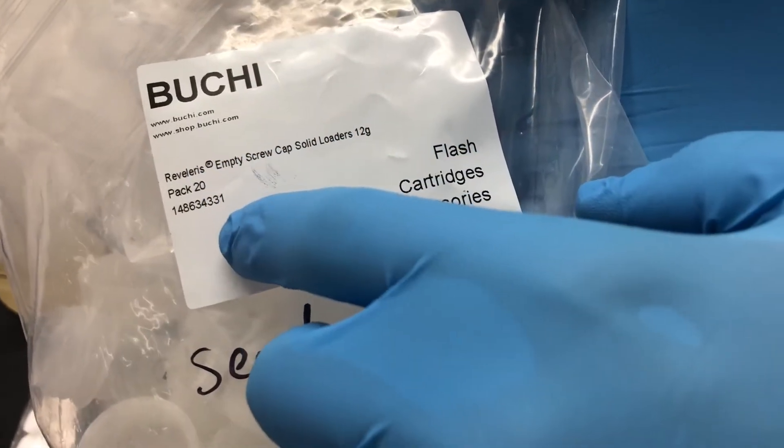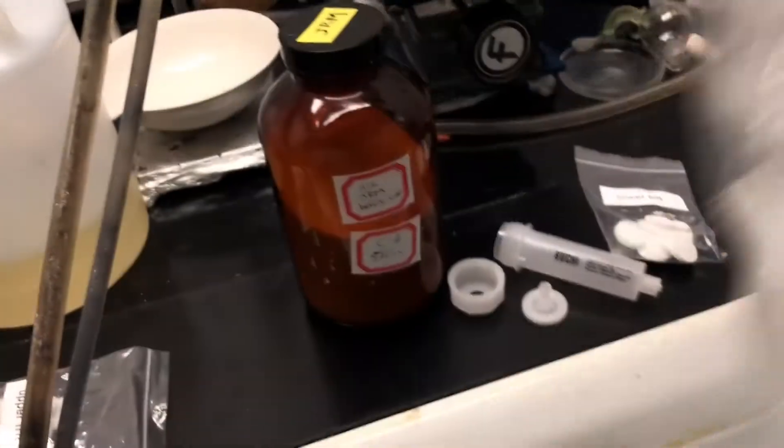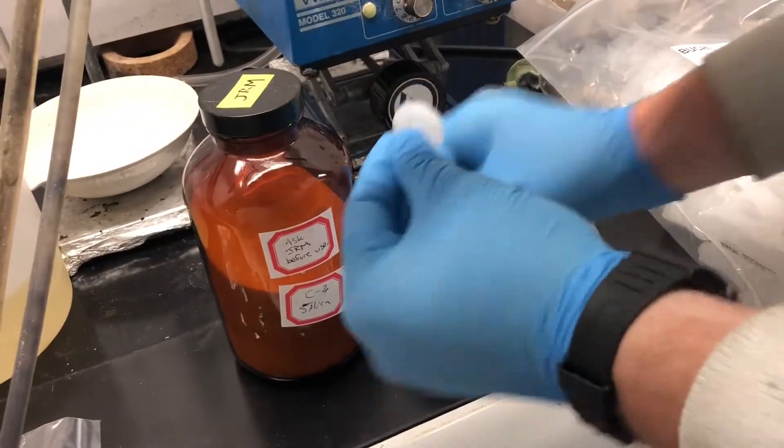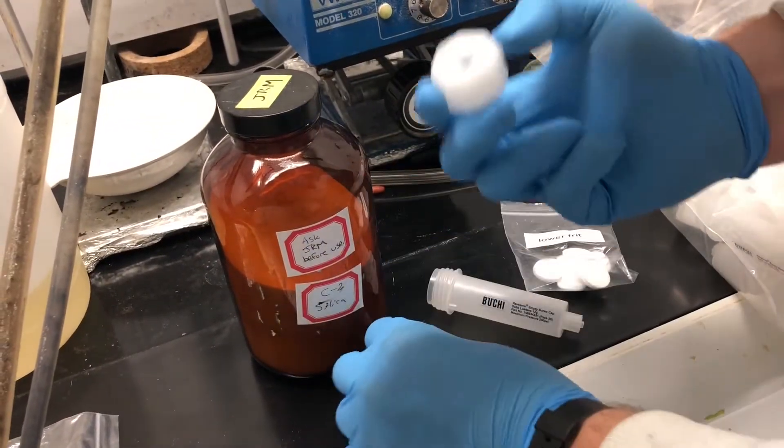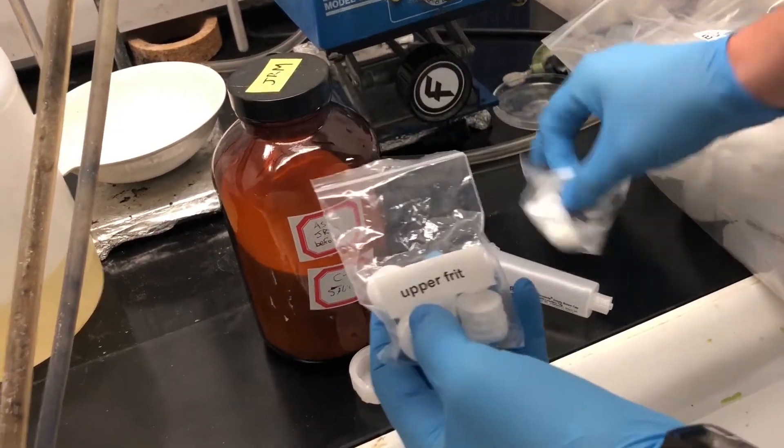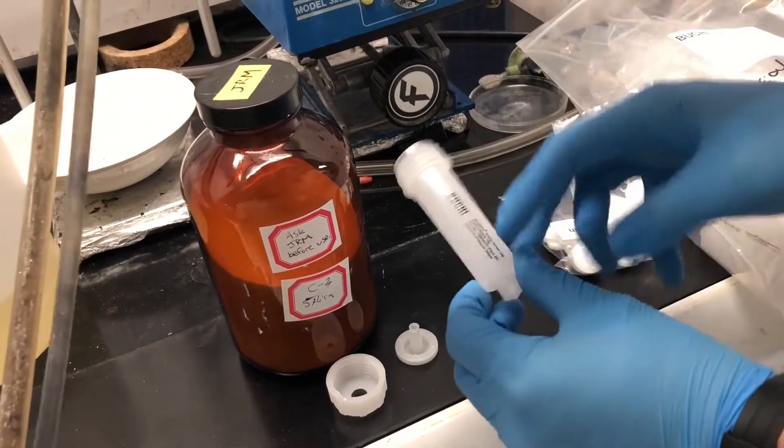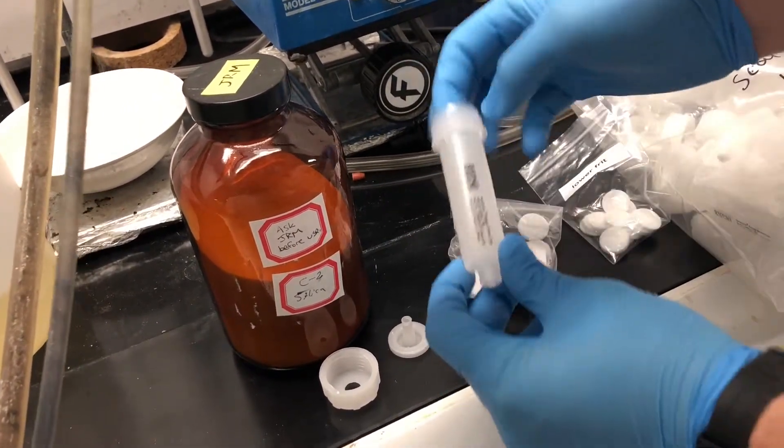We're using these Buchi 12 gram cartridges that come with their own top connecting piece adapter, the screw-in for the top, the cartridge itself, and an upper and lower frit. The lower frit is for down here, upper frit is for the top.